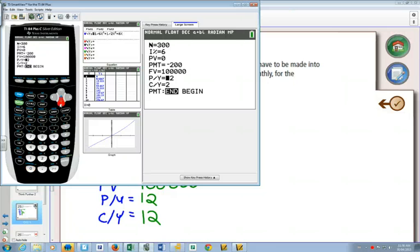And 12, and 12. Now that we've put everything in, we can go to the one we want to solve for, and go alpha solve, 251.117.